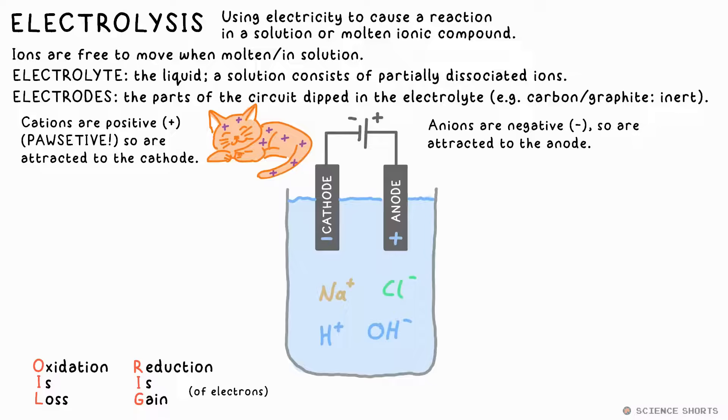The opposite is true at the anode. Anions have extra electrons, which the anode, which is positive, can accept from them. Anions are therefore oxidized at the electrode. They give their extra electrons to the anode. These can result in a metal coating the electrode or bubbles of gas being produced as the ions turn back into atoms.